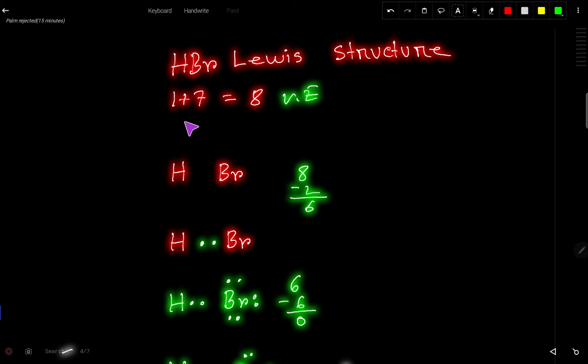Let us connect them. To connect, we will use one dash or two dots. Two dots mean one bond. Out of eight electrons, we have used two for connecting these two atoms, so we have six valence electrons left.